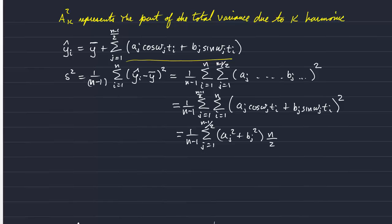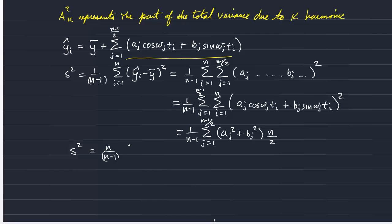So you can see that the variance of our whole record, our whole record being approximated by our best fitting function, is then equal to n over n minus 1 over 2 times the sum over all of our harmonics of simply A sub j squared.